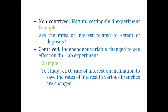In perspective of a business or management student, non-contrived study examples include the rate of interest related to the extent of deposits. That type of relationship and experiment setting is totally a non-contrived study. For contrived study in a business context, the independent variable is changed to see the effect on the dependent variable in a lab setting. An example is studying the effect of the rate of interest on inclination to save, where interest rates in various branches are changed.